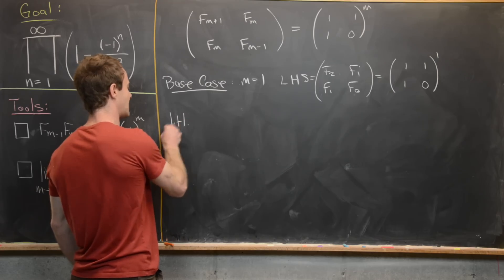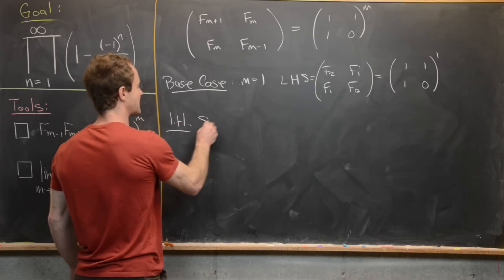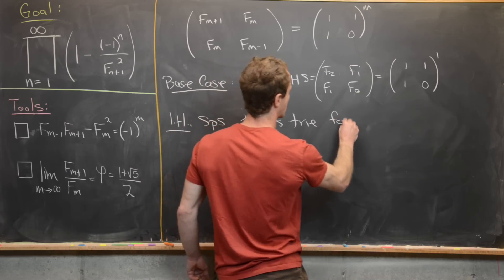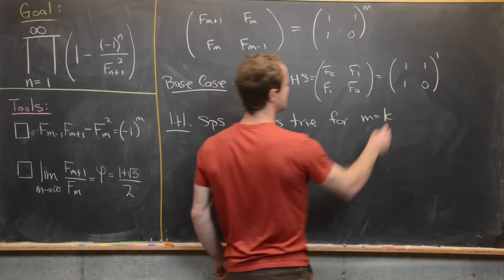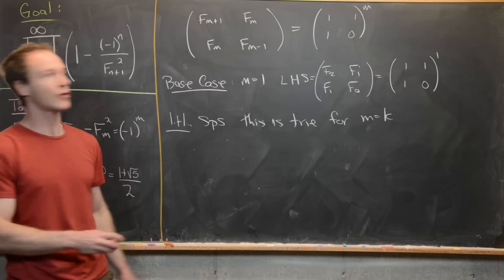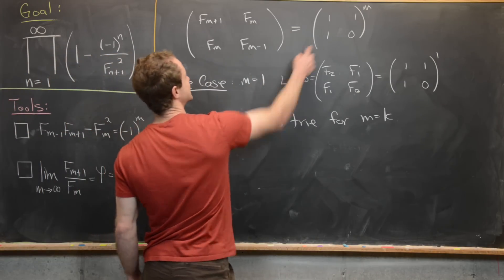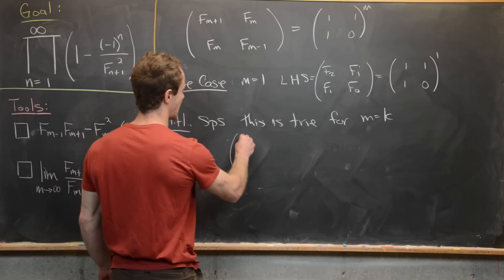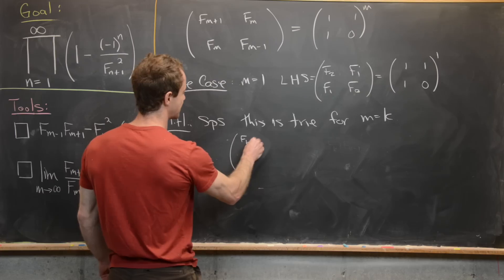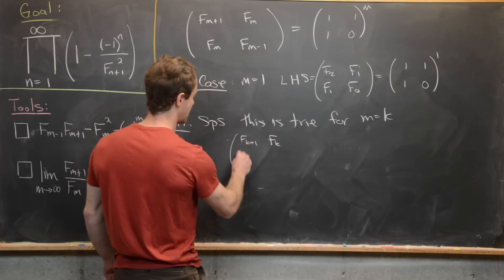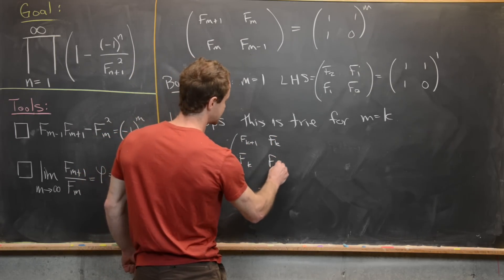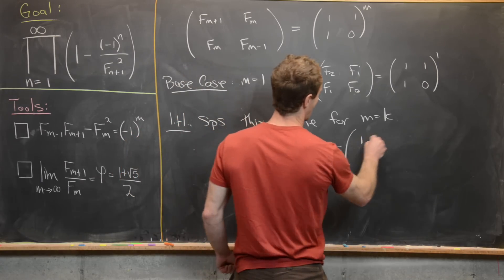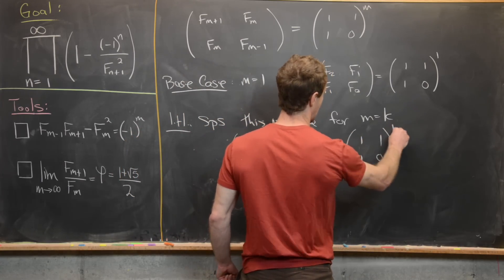Now let's make the induction hypothesis. Suppose this is true for m equals k. So we know that the matrix [[F_{k+1}, F_k],[F_k, F_{k-1}]] equals [[1,1],[1,0]] to the k-th power.